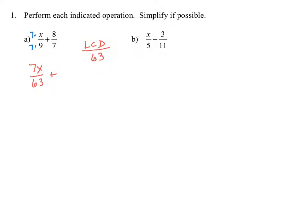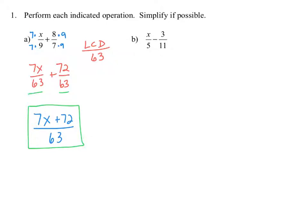And 8 over 7 can also be written as an equivalent fraction with a denominator of 63. In order to make 7 into 63, you need to multiply by 9. So multiplying the denominator by 9, we also multiply the numerator by 9, and 8 times 9 is 72. So x over 9 plus 8 over 7 is the same as 7x over 63 plus 72 over 63. Since we have common denominators, we can add those into one fraction: 7x plus 72 in the numerator over 63.